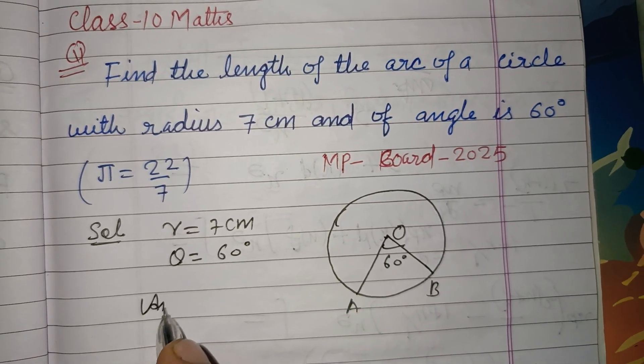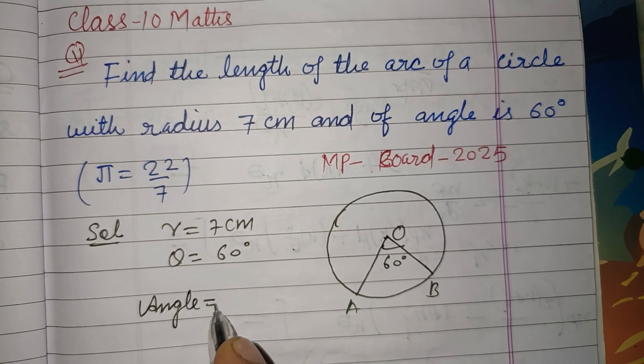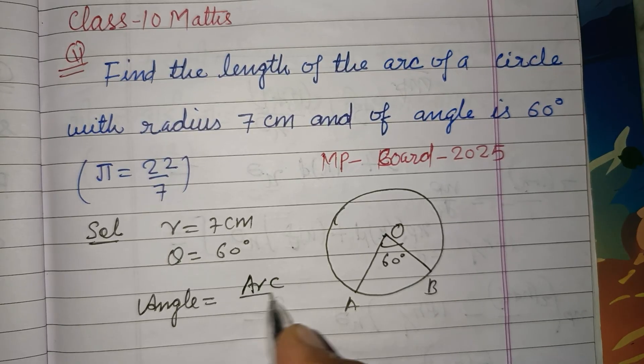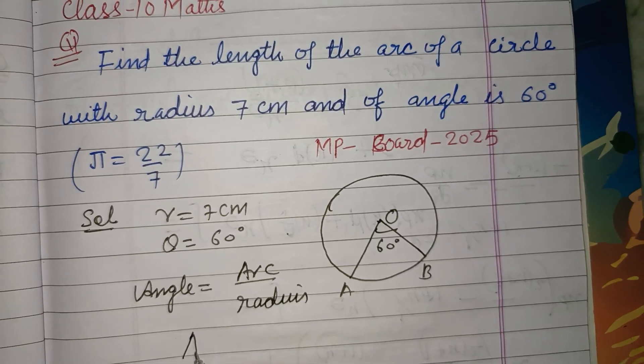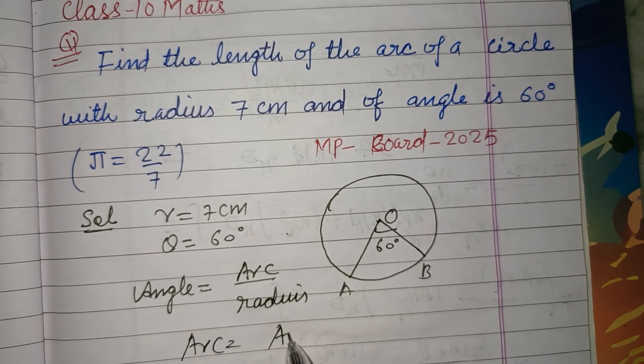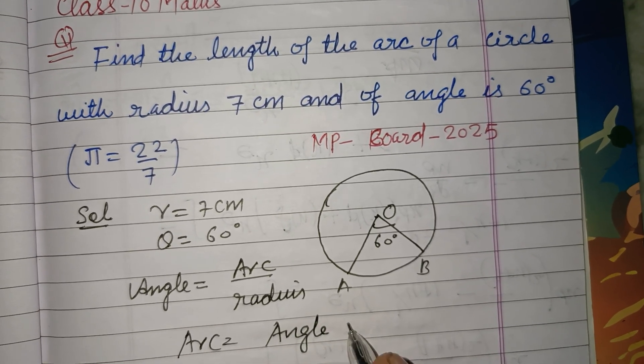And angle equals arc over radius. We have this formula, therefore arc equals angle into radius.